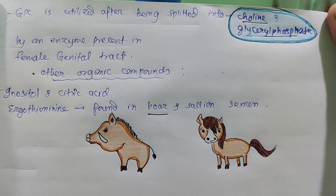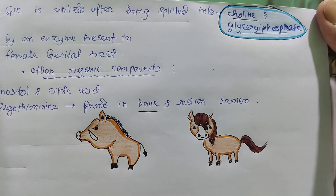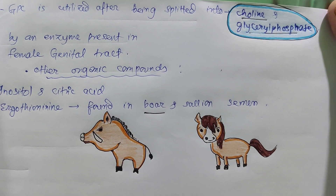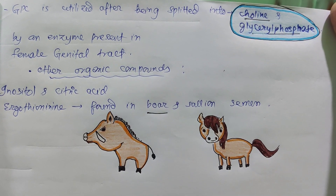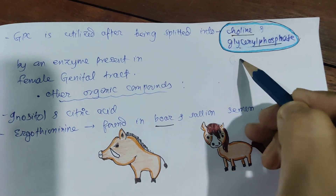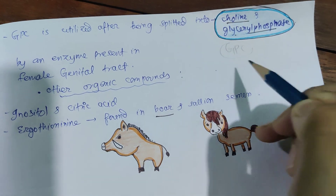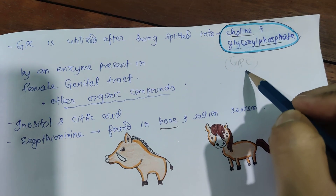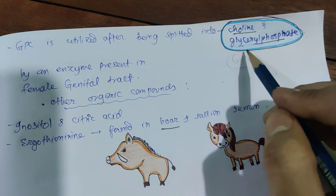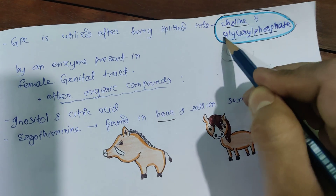One important point: GPC cannot be metabolized as such. It is utilized only after being converted into choline and glyceryl phosphate by an enzyme present in the female genital tract. So GPC is broken down into choline and glyceryl phosphate (GP).